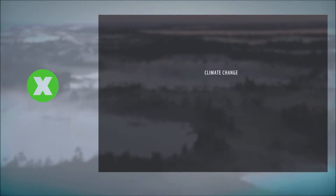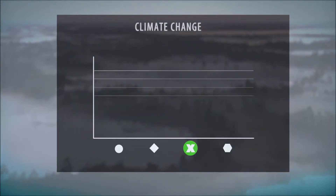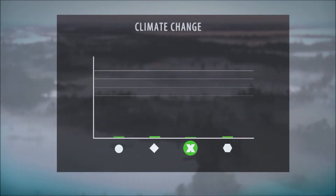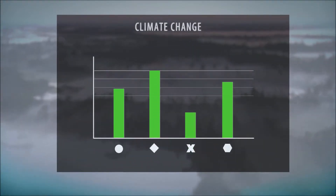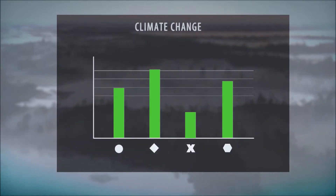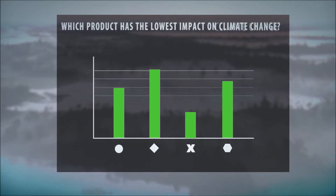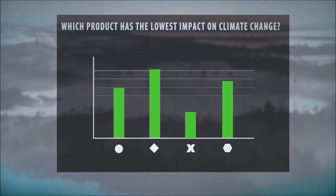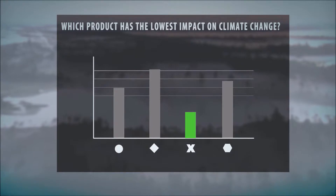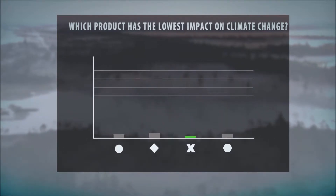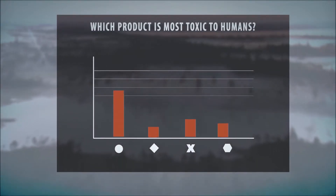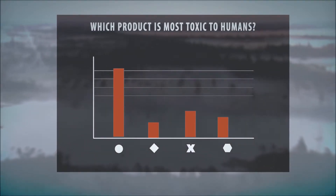This way, products can be compared by using specific environmental themes. This allows us to answer questions like: Which product has the lowest impact on climate change? Or: Which product is most toxic to humans?